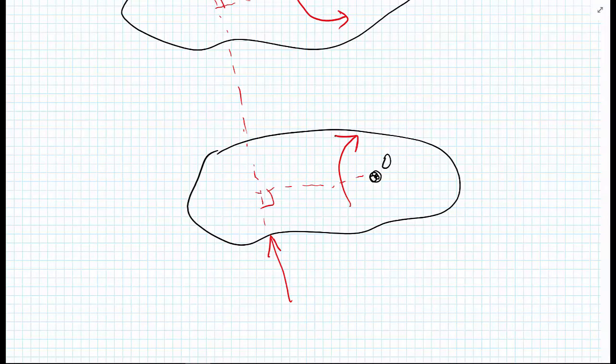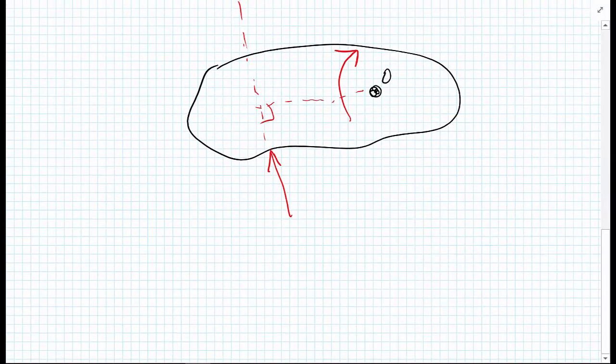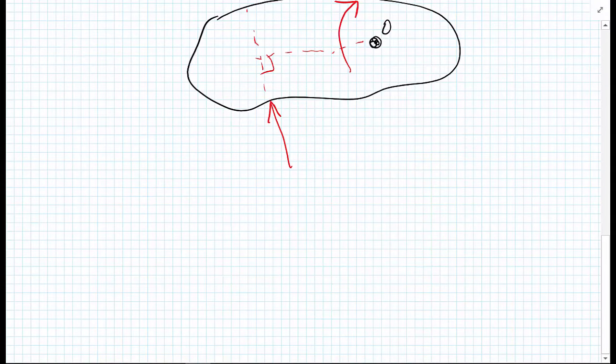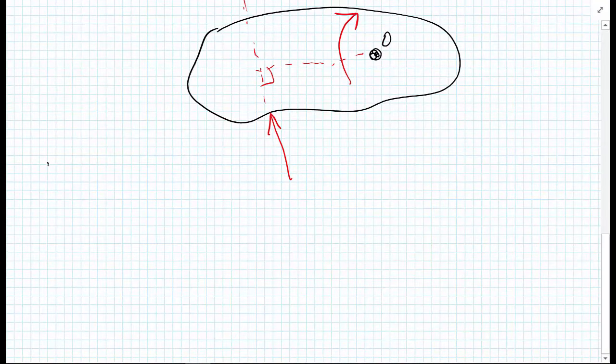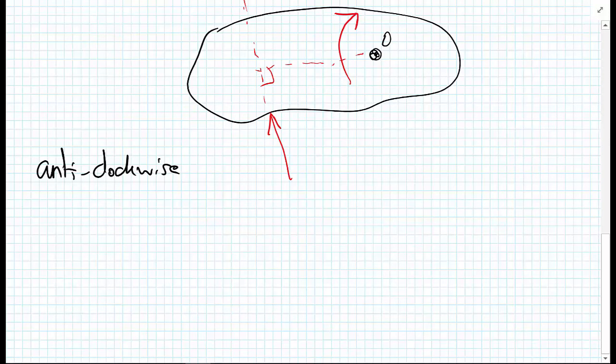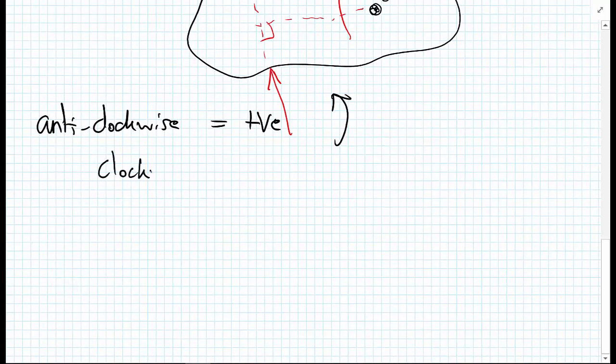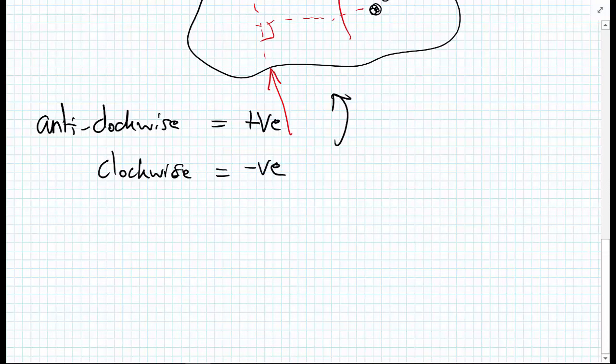We need to have some way of distinguishing whether we're going clockwise or anti-clockwise. We're going to have a sign convention. Going in an anti-clockwise direction equals the positive direction, which naturally means that the clockwise direction is the negative direction. This is just purely a choice with all sign conventions.